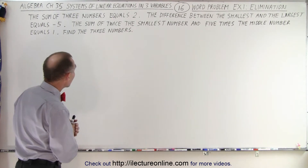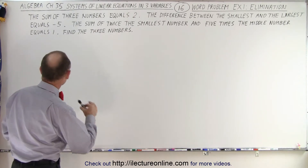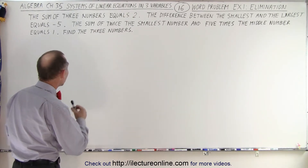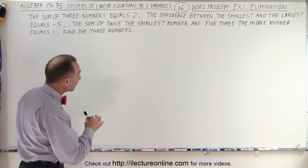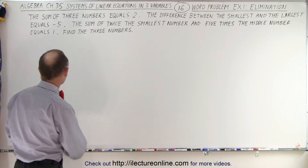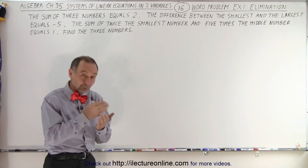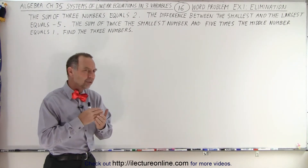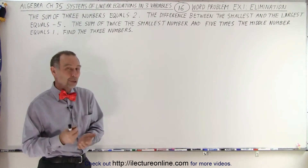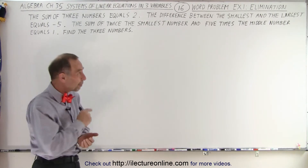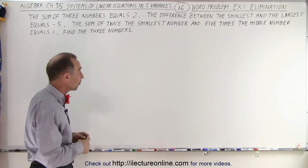The sum of three numbers equals 2. The difference between the smallest and the largest equals negative 5. And the sum of twice the smallest number and 5 times the middle number equals 1. Find the three numbers. So here we have three unknowns, and we're going to need three equations. But before we do that, we need to define the three unknowns in terms of some variable.